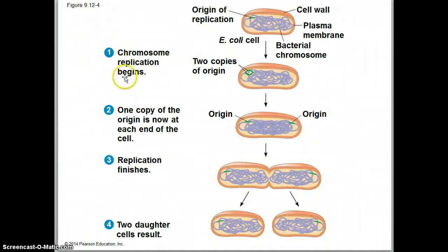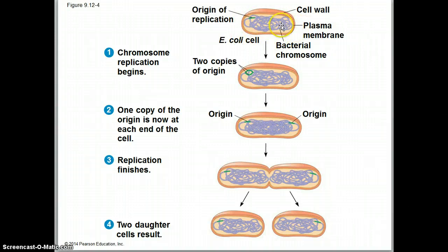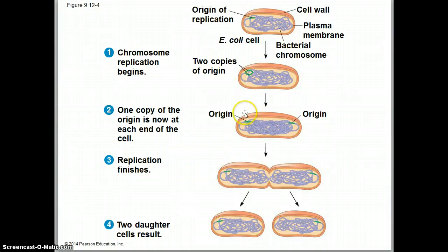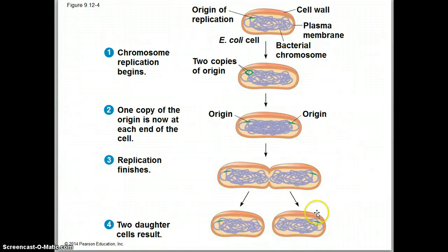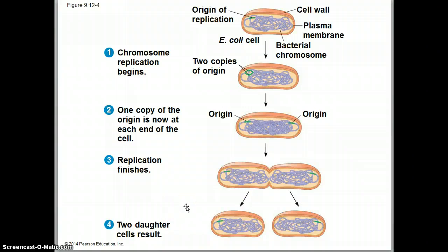In step one, chromosome replication begins. Here's my E. coli cell with cell wall, cell membrane, and all the DNA. The very center of the cell is the nucleoid region — there's no nucleus here. There's an area called the origin of replication where the DNA is going to start replicating. Those origins will find their way to opposite sides of the cell. Eventually, when all of the DNA in that single chromosome has been replicated, the cells will pinch off and form two genetically identical daughter cells. This can take place very rapidly because bacteria are quite simple organisms — some bacteria can replicate as fast as once every 20 minutes.